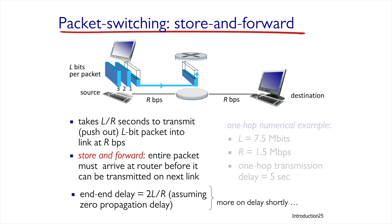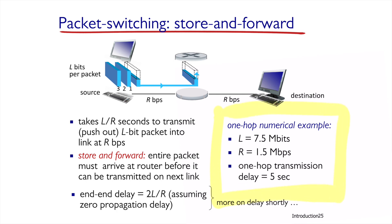Let's say the size of the transmitted message is 7.5 megabytes, which is 7.5 million bytes, and the bandwidth is 1.5 megabytes per second. In this case, each point along the route will take 7.5 megabytes divided by 1.5 megabytes per second — that is 5 seconds. If there is one router between the points, the whole process will take 10 seconds. If there are two routers, the process will take 15 seconds, and so on.